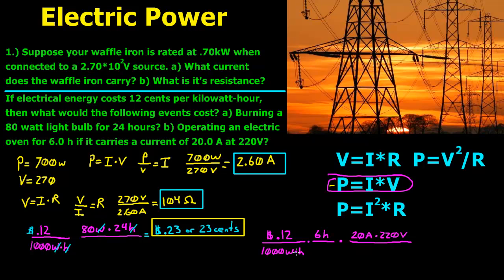The answer comes out in watts, so the watts cancel out — the amps and volts cancel out too. When you multiply 0.12 times 6 hours times 20 amps times 220 volts, then divide by 1000, it equals $3.16. That is the cost to run the oven for 6 hours. I hope that helped, thank you.